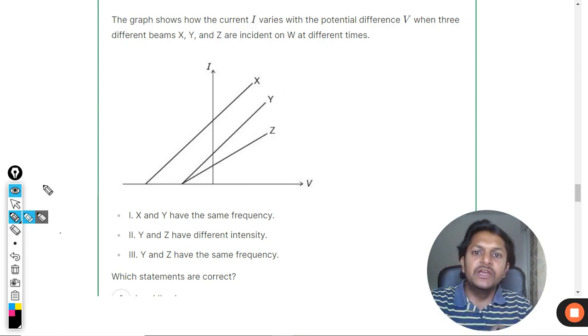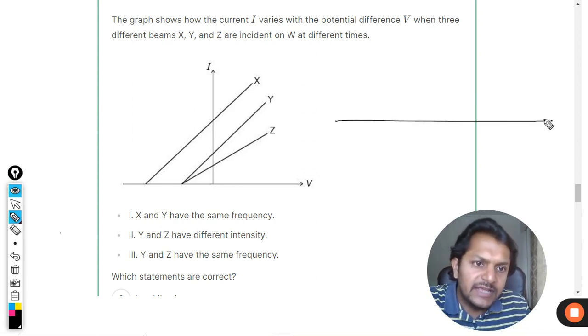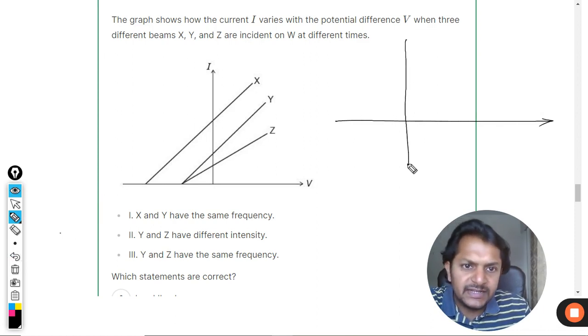First of all, this behavior that they have drawn is not that linear, by the way. It's basically, it goes like this - it's like this and this is the stopping potential.